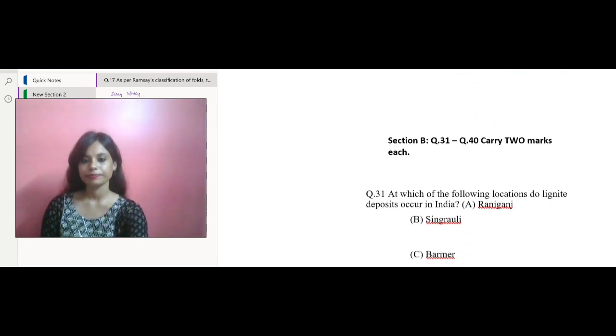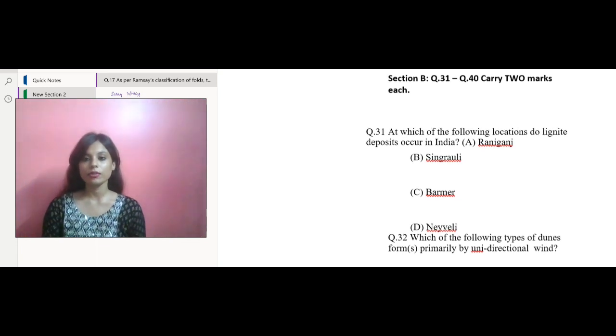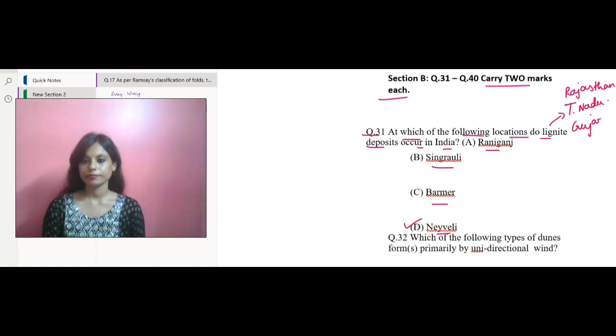Let's move to the next question. We are starting section B where you have two marks for each answer. The question says at which of the following locations do lignite deposits occur in India? We have the options like Raniganj, Singroli, Barmar and Neveli. Your correct option would be Neveli. Lignite deposits in India are found in several locations like Rajasthan, Tamil Nadu, Gujarat, and also in Jammu and Kashmir.